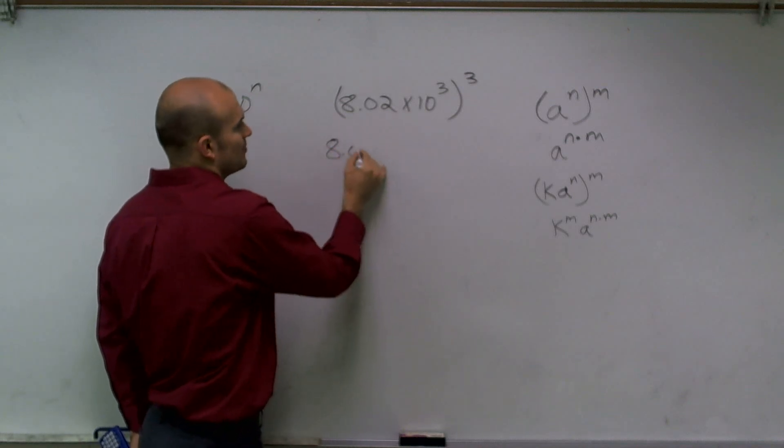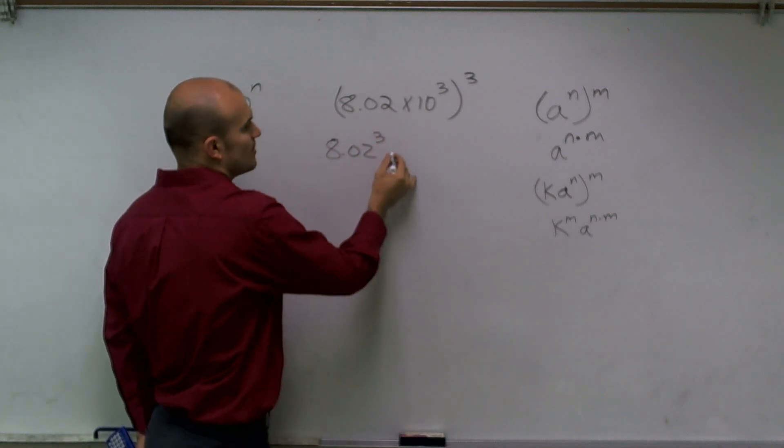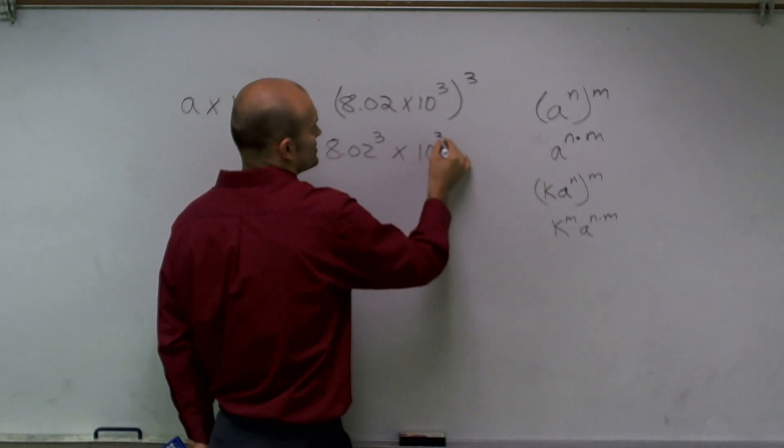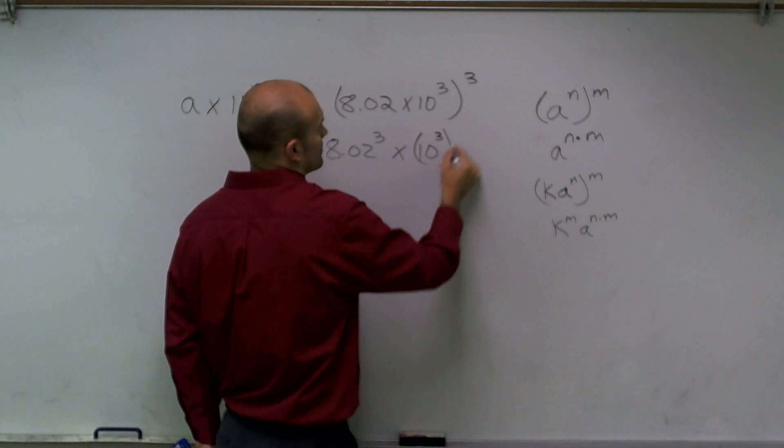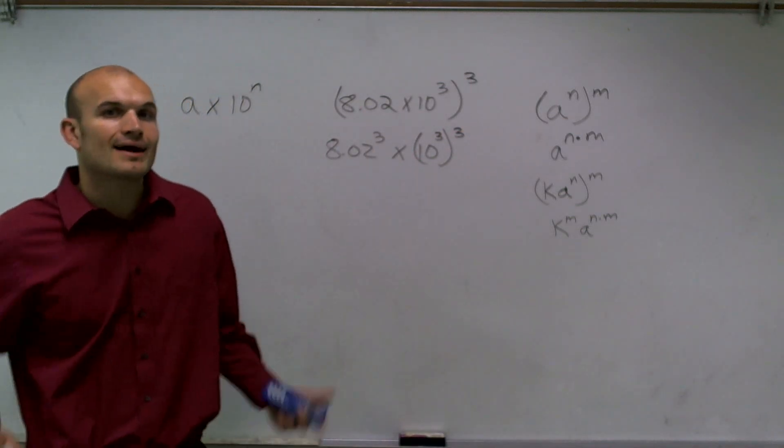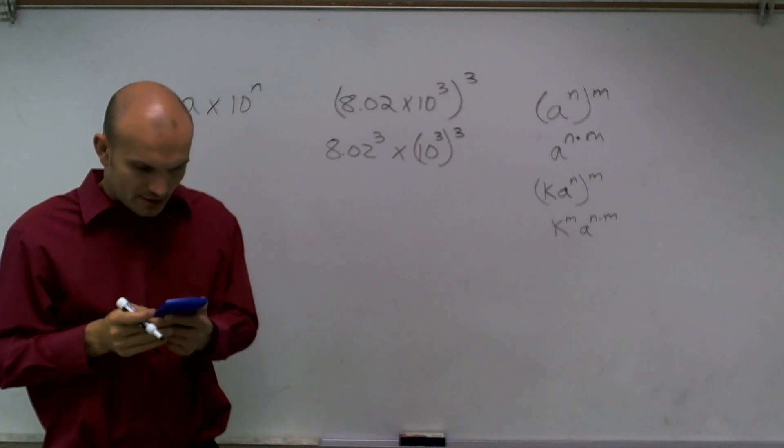I'm going to rewrite this as 8.02 to the third power and then times 10 to the third cubed. Well, 8.02 to the third power, I don't know that by my head, so I'm going to type that in my calculator.